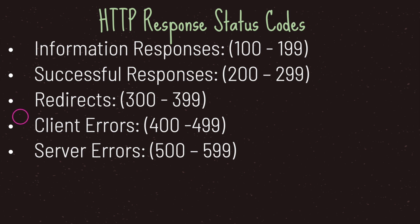The next type is client error codes, ranging from 400 through 499. These codes let you know when it's the client's fault — for example, when the client does not have permission to access a resource or is trying to access a resource that does not exist. And lastly, we have server error status codes — 500 through 599 — which let the client know that something is wrong on the server. Status codes are useful when we need to do something on the client side.